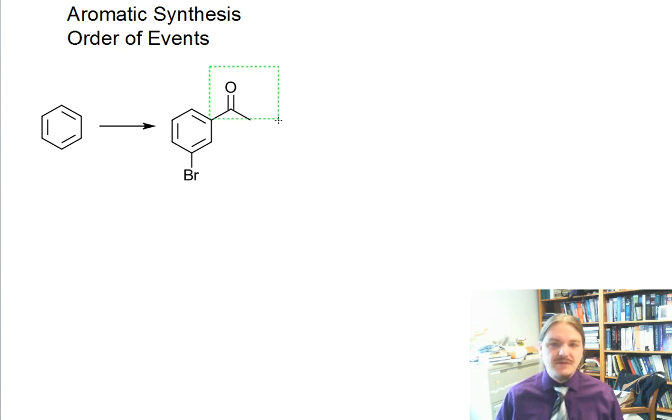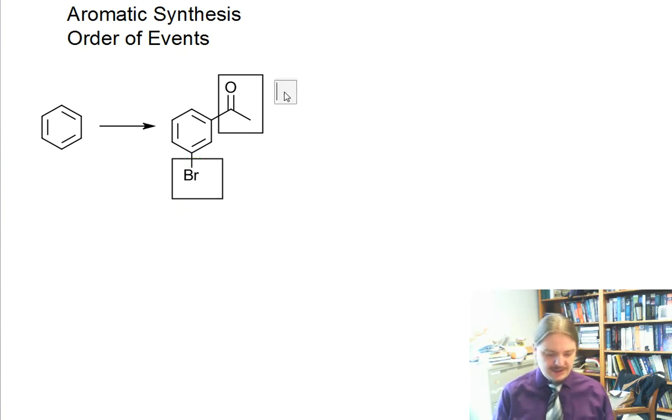Given that, at least in the electrophilic aromatic substitution world, there aren't that many combinations of things. There are only five overall reactions. It's pretty easy at the get-go to suggest what we need to do to add a particular reagent or a particular functional group.